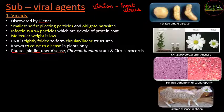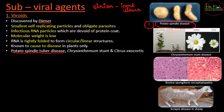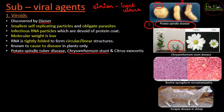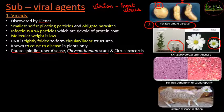Viroids spread infection only in plants - they do not affect animals or humans. Diseases caused by viroids in plants include potato spindle disease, where infected potatoes appear different from healthy ones, and chrysanthemum stunt disease, where the plant is dwarf and shows stunted growth in flowers.